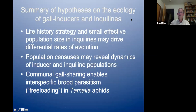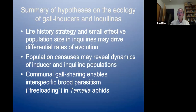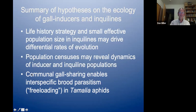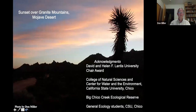Some summary points: the life history strategy, mode of dispersal, and small effective population sizes of inquilines may accelerate their rate of evolution thanks to genetic bottlenecks — a hypothesis I am exploring. By doing population censuses of galls and extrapolating the total aphid population, we may expose dynamics that shed light on whether genetic bottlenecks are occurring. Communal gall sharing enables interesting intraspecific brood parasitism — also known as freeloading — in Tamellia aphids. The fact that females happily share gall space opens the door to inquilines that capitalize on and exploit it.